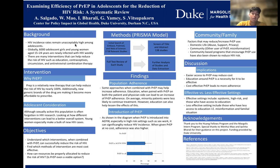Here are our main findings. Population adherence was significantly factored in with education — the more education was increased, the more that people had adherence with PrEP. On average, minority patients were less likely to continue treatment, but when factoring in education, it can help lessen the effects of this.